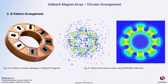The vector and contour plots highlight how the magnetic field strength is more concentrated in specific areas, providing even more robust performance. This arrangement is particularly advantageous in applications like electric motors and generators.